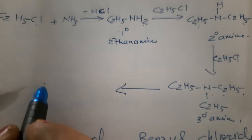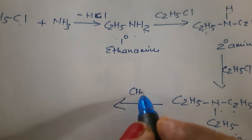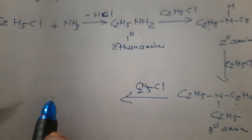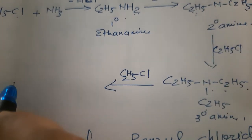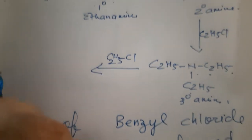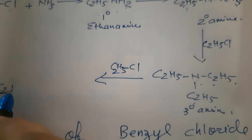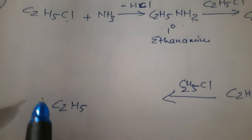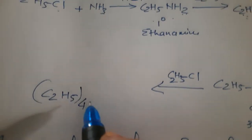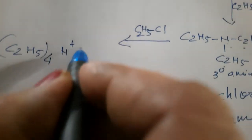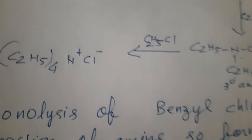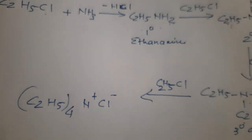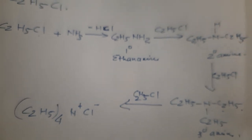Now, quaternary salt. One more C2H5Cl add. Same. Now, it will form, see carefully, C2H5, 4 times, N+Cl-. So, this is quaternary ammonium salt. Fine. So, in this way you will have to understand this reaction.